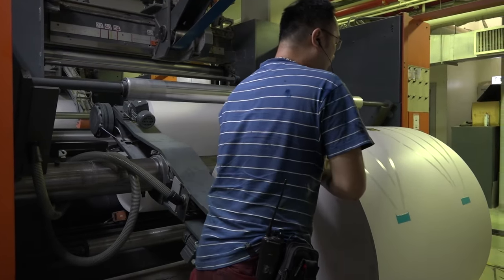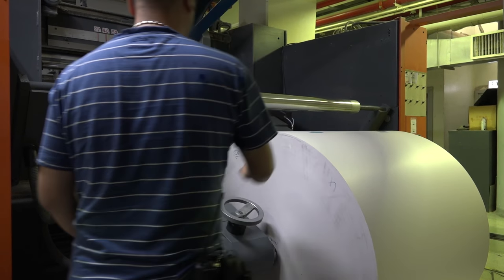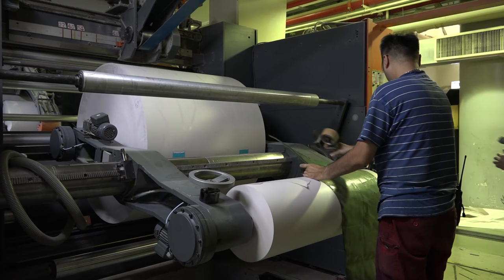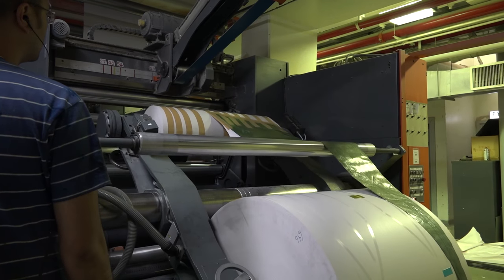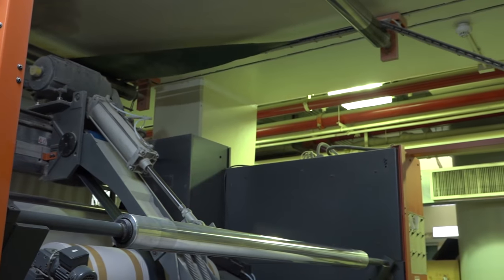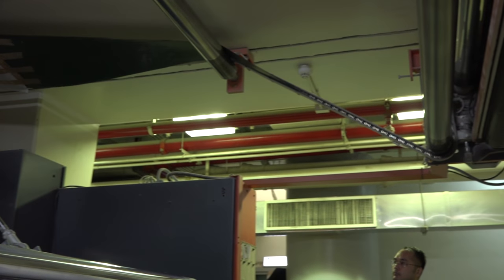A rotary press uses a continuous roll of paper. A plastic guide called a kite is taped onto the end of the giant paper roll, which is then threaded through rollers inside the press.